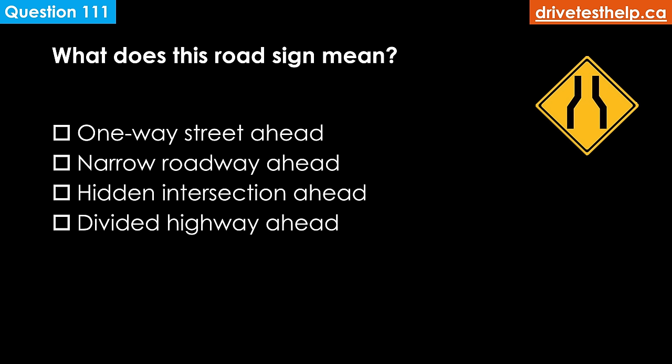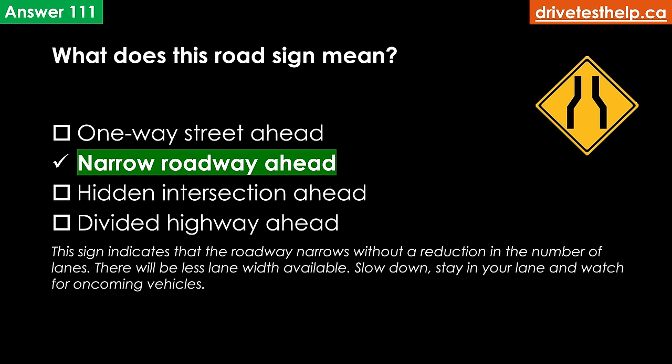What does this road sign mean? Options: one-way street ahead; narrow roadway ahead; hidden intersection ahead; divided highway ahead. The correct answer is narrow roadway ahead. This sign indicates that the roadway narrows without a reduction in the number of lanes — there will be less lane width available. Slow down, stay in your lane and watch for oncoming vehicles.